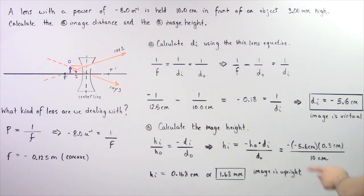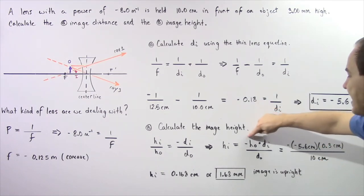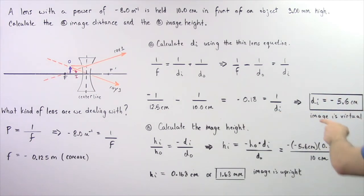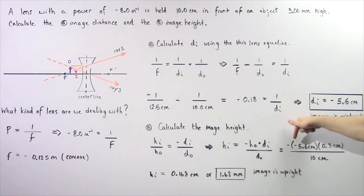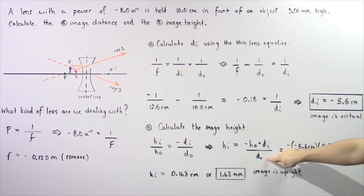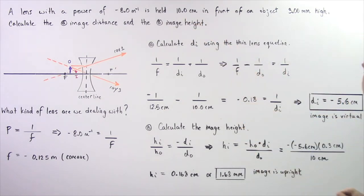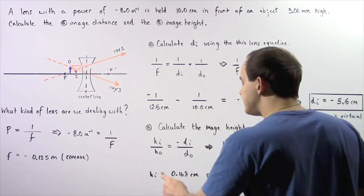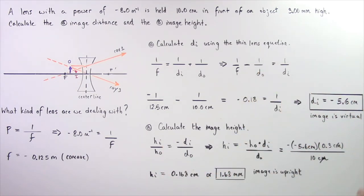Keeping our answer in centimeters: HO is given as 3 millimeters, or equivalently 0.3 centimeters. There is a negative sign in front, and DI was found to be negative, so negative times negative becomes positive. So we have 5.6 centimeters multiplied by 0.3 centimeters divided by the object distance of 10 centimeters. The centimeters cancel, giving an image height of 0.168 centimeters, or equivalently 1.68 millimeters.